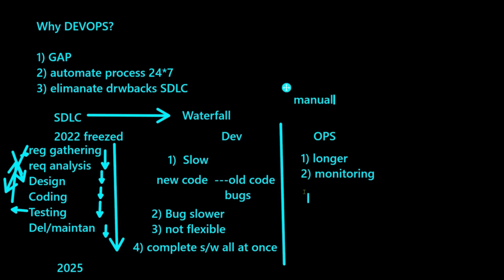Everything is manual. There is also no proper configuration management. Configuration management means having a detailed history of the configurations happening on your infrastructure — we don't have such a detailed history manually; we need some tools. There are no tools used here, poor monitoring, poor configuration management, and maintaining servers for longer durations are all challenges. These are the challenges of the ops team — both teams face challenges because of the waterfall methodology. Is there any way to overcome these challenges?